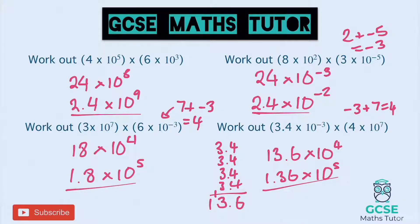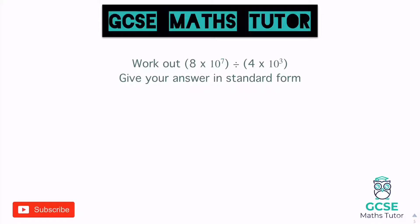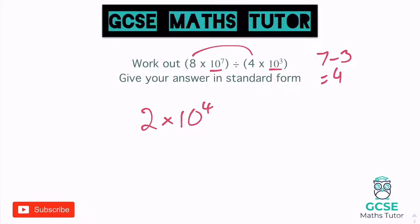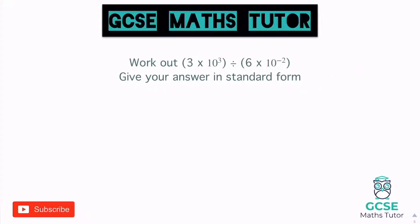Now let's look at division. We have 8 times 10 to the 7 divided by 4 times 10 to the 3. Rather than multiplying, we divide: 8 divided by 4 is 2. When dividing with the same base, we subtract the powers: 7 take away 3 equals 4. So the answer is 2 times 10 to the 4.